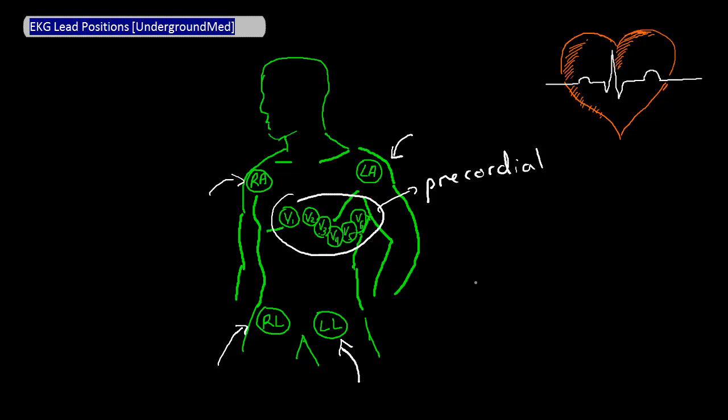However, what is not obvious from looking at the placement of the leads is that twelve different electrical vectors are actually measured from these leads.